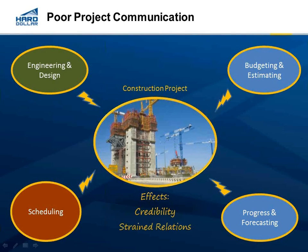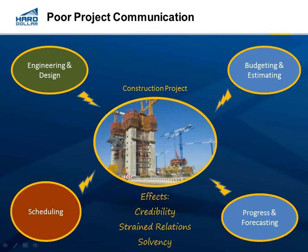Last of all, there are solvency issues. Solvency can be described as the ability of a corporation to meet its long-term fixed expenses and to accomplish long-term expansion and growth. That can be jeopardized by this poor project communication, where cost overruns can really overtake the solvency of the company. Less than 23% of all projects come in under planned budget, according to the KPMG construction survey study.